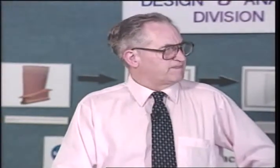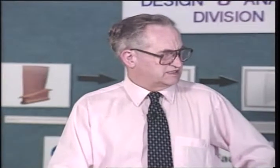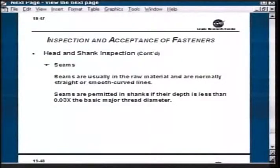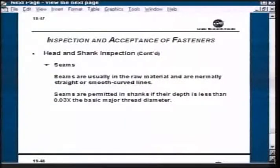Seams are usually in the raw material before forming and are pretty straight. Seams are acceptable because usually they're not a crack per se and they're shallow and have a pretty good radius. It's .03 times the diameter, so if you go with a half inch fastener, you still have something there that you would have trouble even seeing - it's so shallow. So that would be okay.